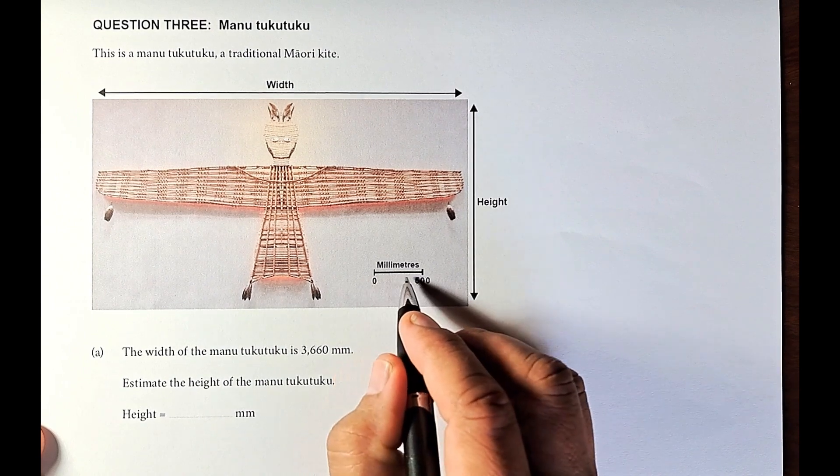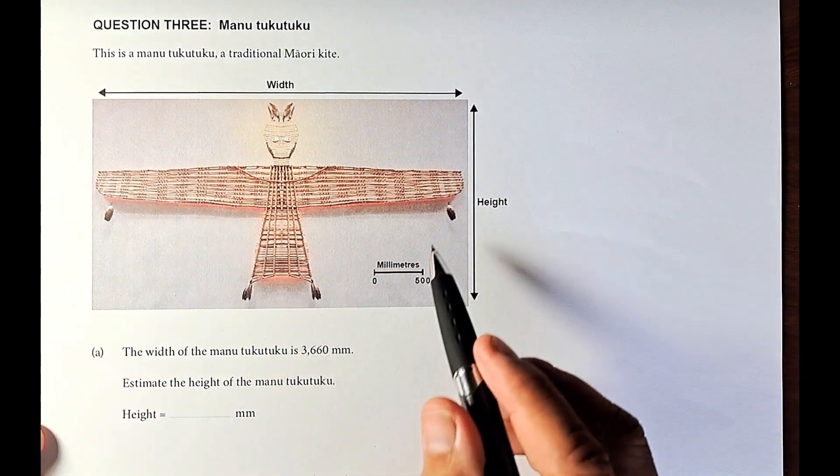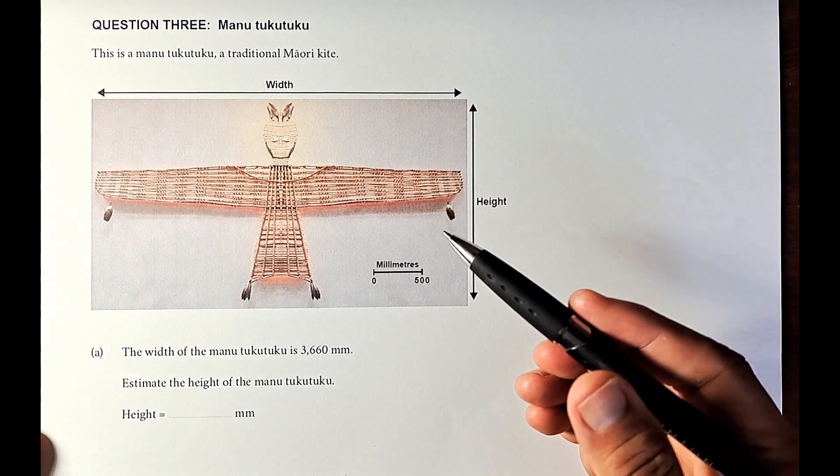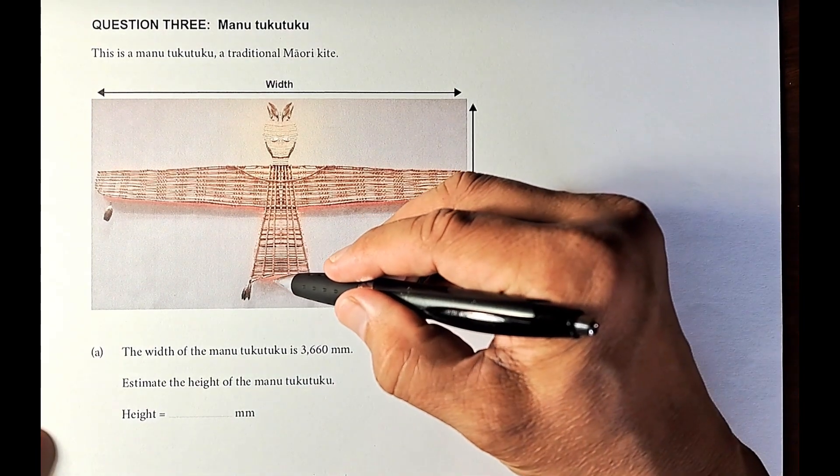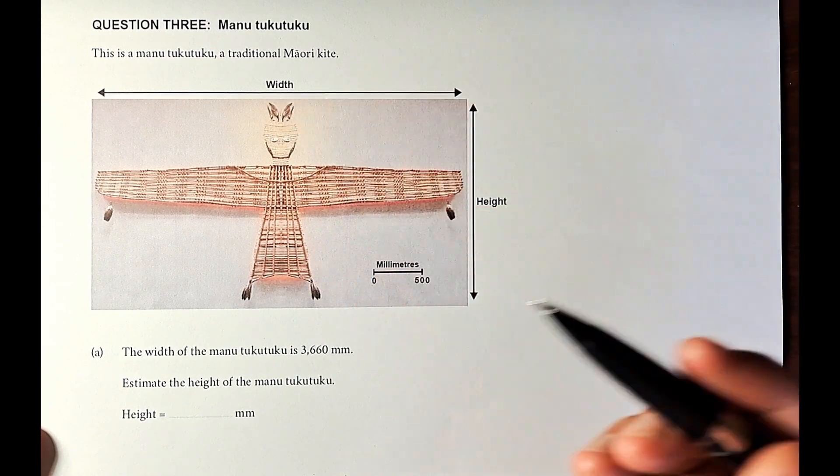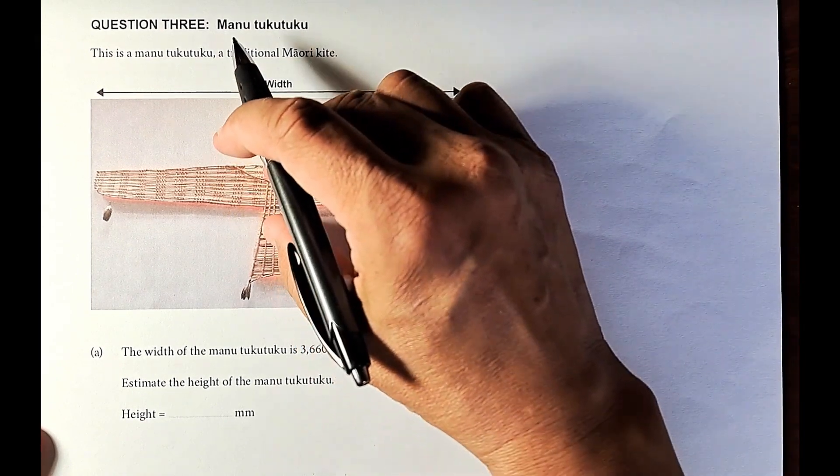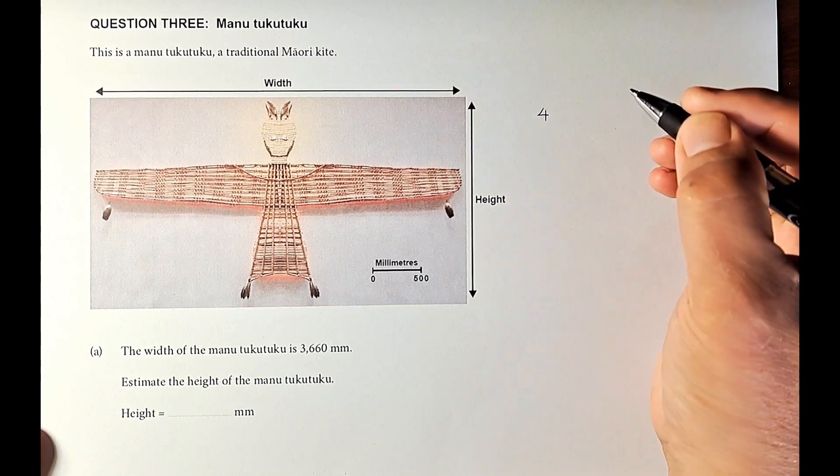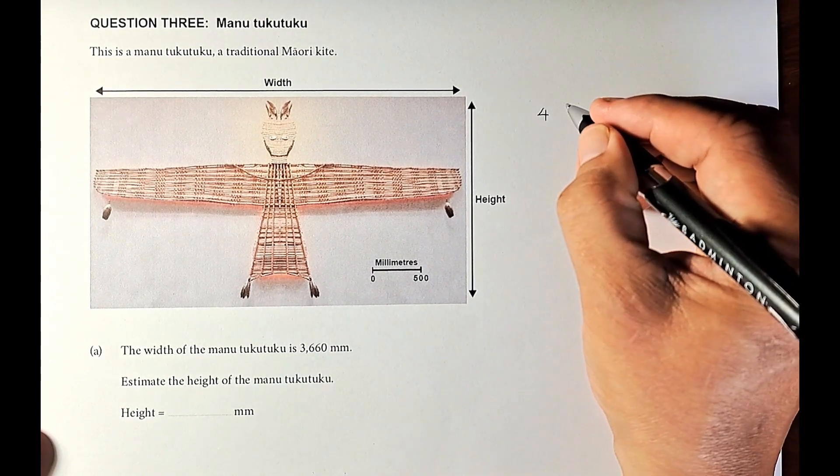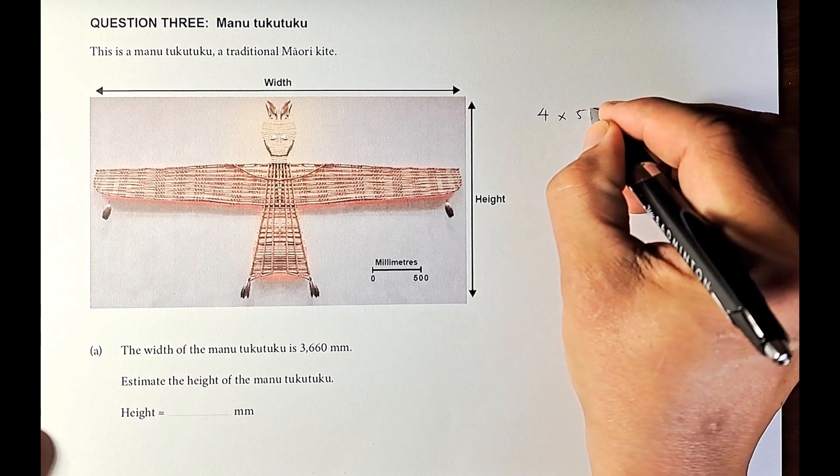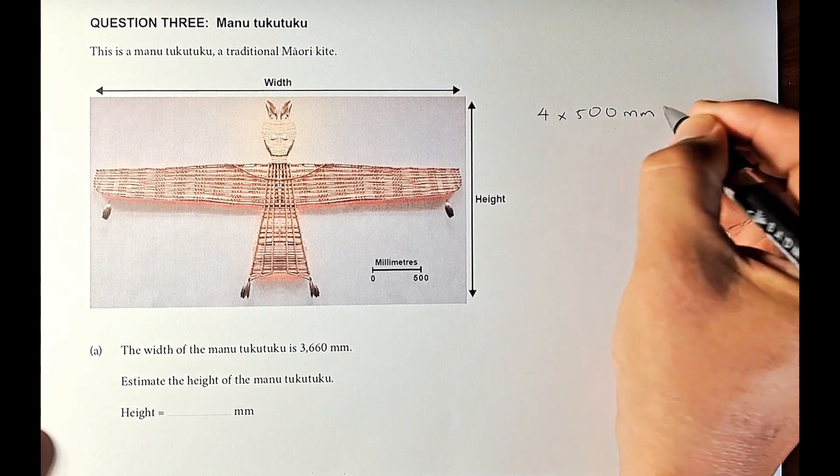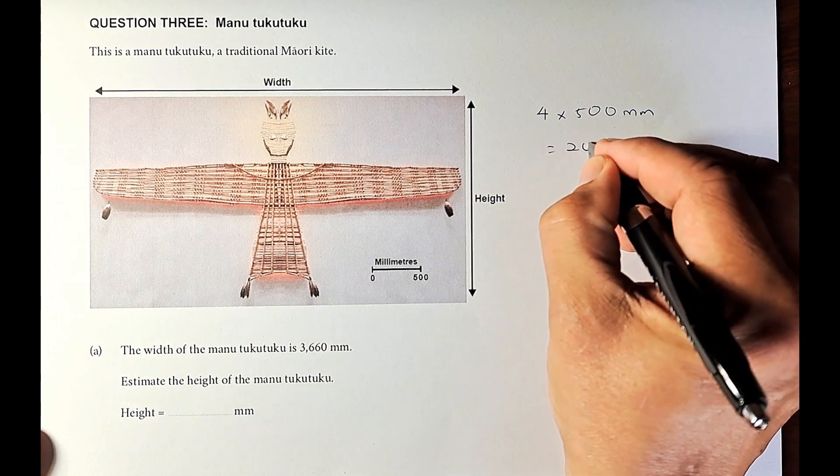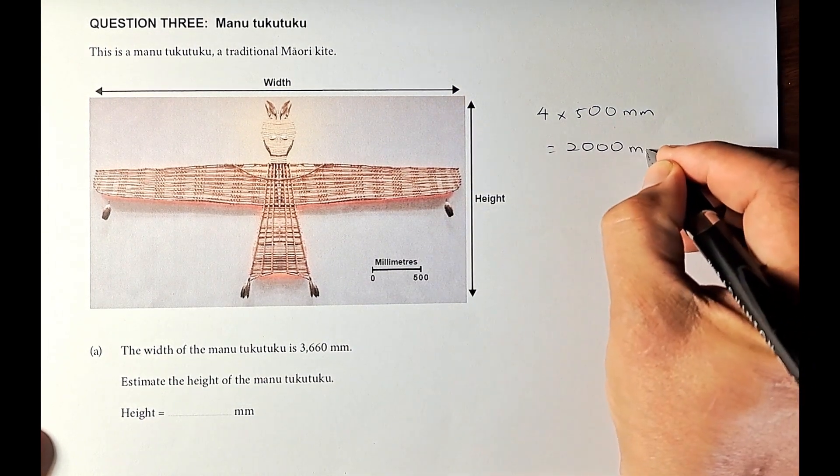So to calculate the height, we need to calculate here to here. If that is 1, 2, 3, 4, so we are going to take the scale factor of 4, multiply by 500mm. And you put in your calculator and the answer is going to be about 2000mm.